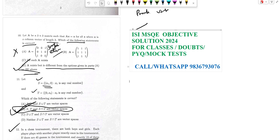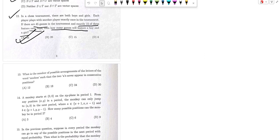Hello dear students, today we are solving the ISI MSQB question paper and this is the 30 number question. What is the number of possible arrangements of the letters of the word madam such that the two a's never appear in consecutive position?